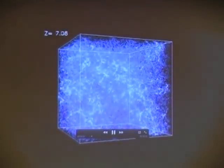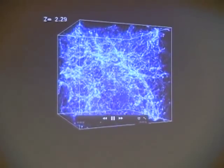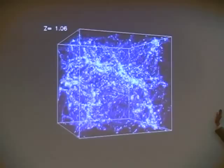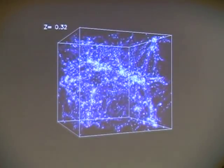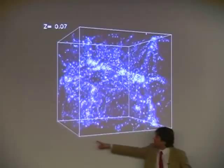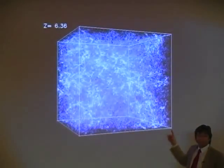Let me show you another version of this movie where I'm just artificially not showing you the expansion so you can see how something very smooth gradually gets clumpy. Okay? This is a huge cube. This is several hundred million light years from side to side.